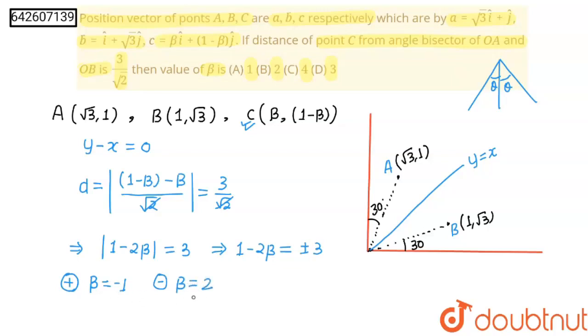So, there are two values of beta for the given information. But in the options, only given is 2. So, option B is correct. Thank you, students.